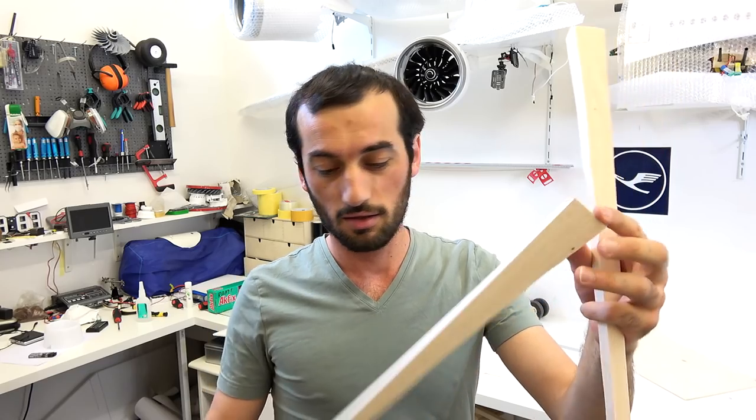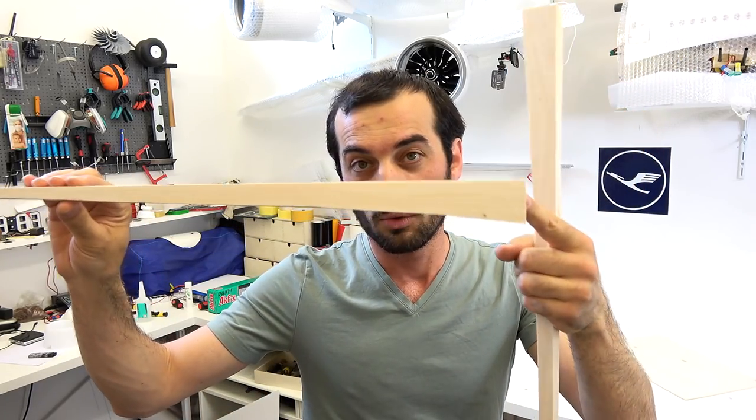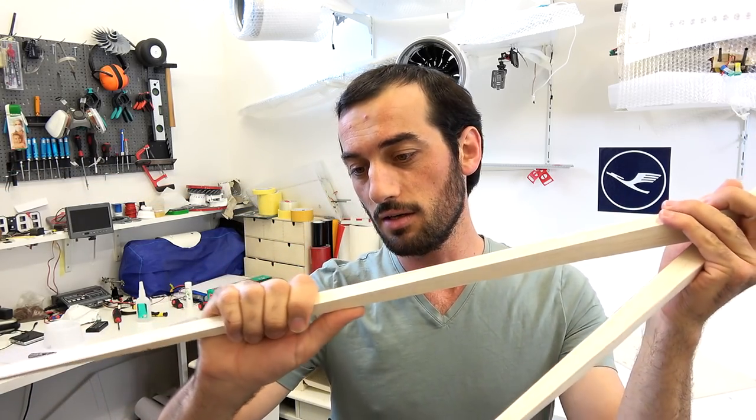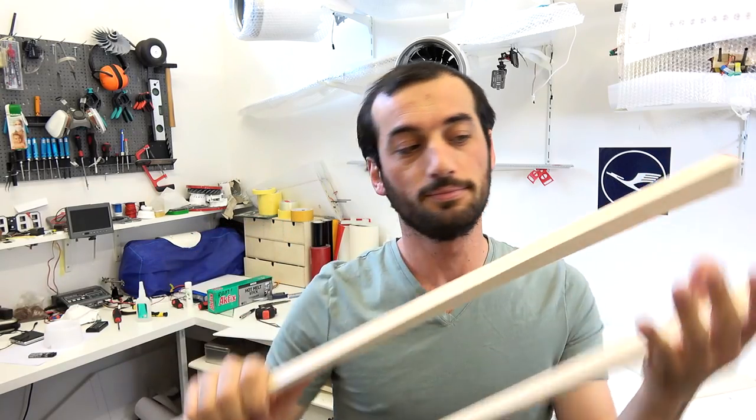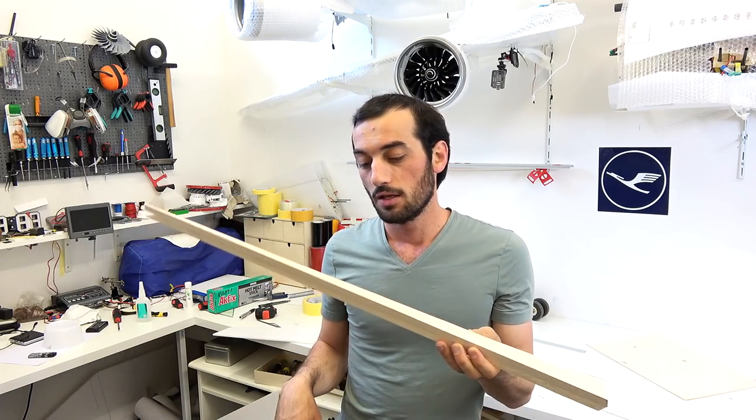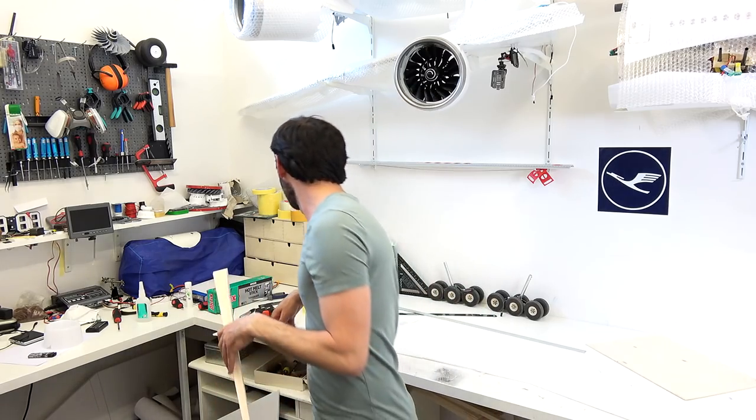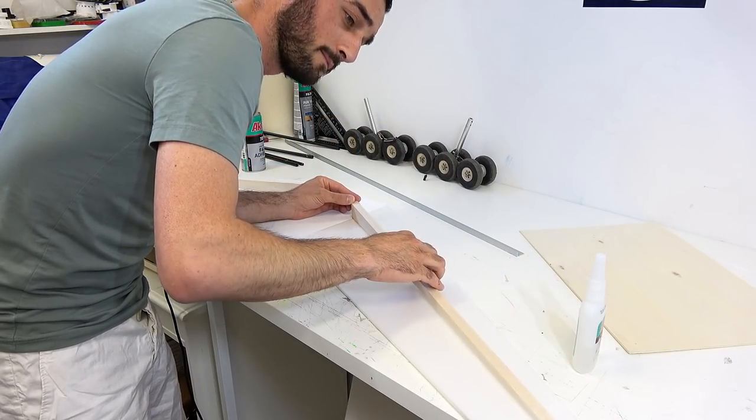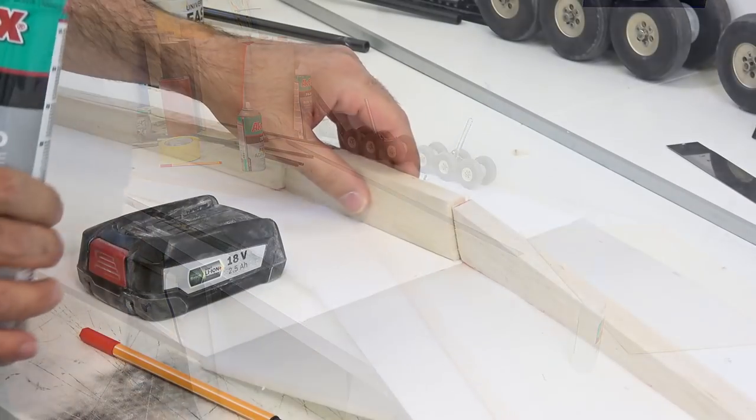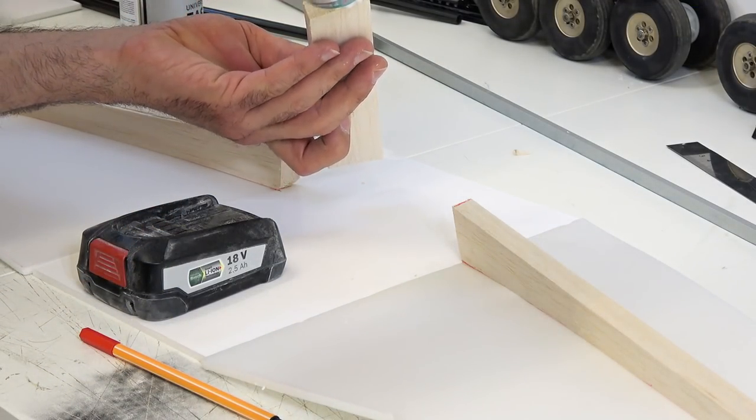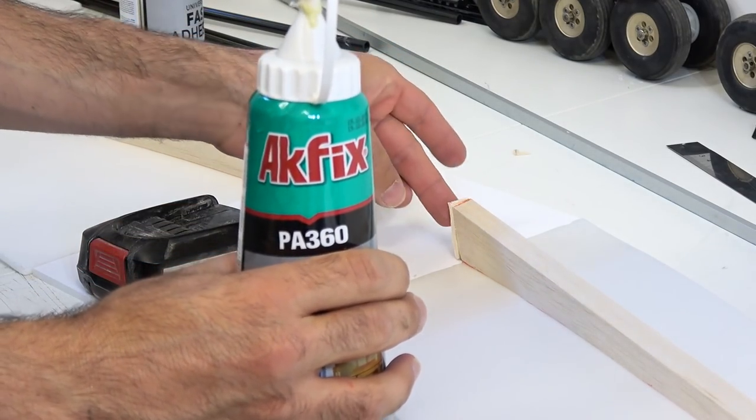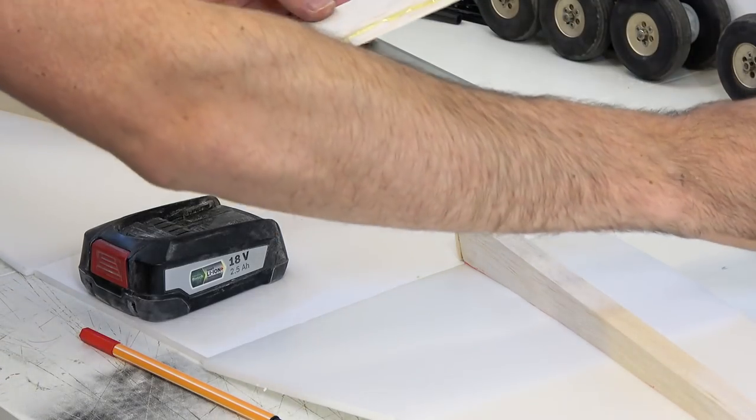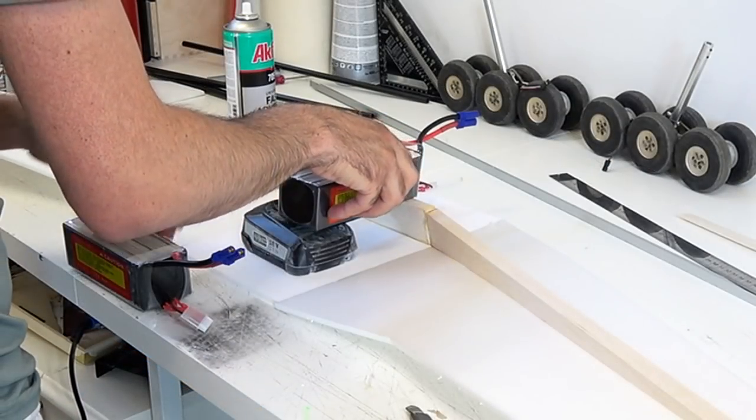Those two pieces of wood, they are like the main spar for the wings. Look at the shape. I mean, they are from balsa, light. And I think I will reinforce them with some fiberglass, or I would just use some carbon fiber.